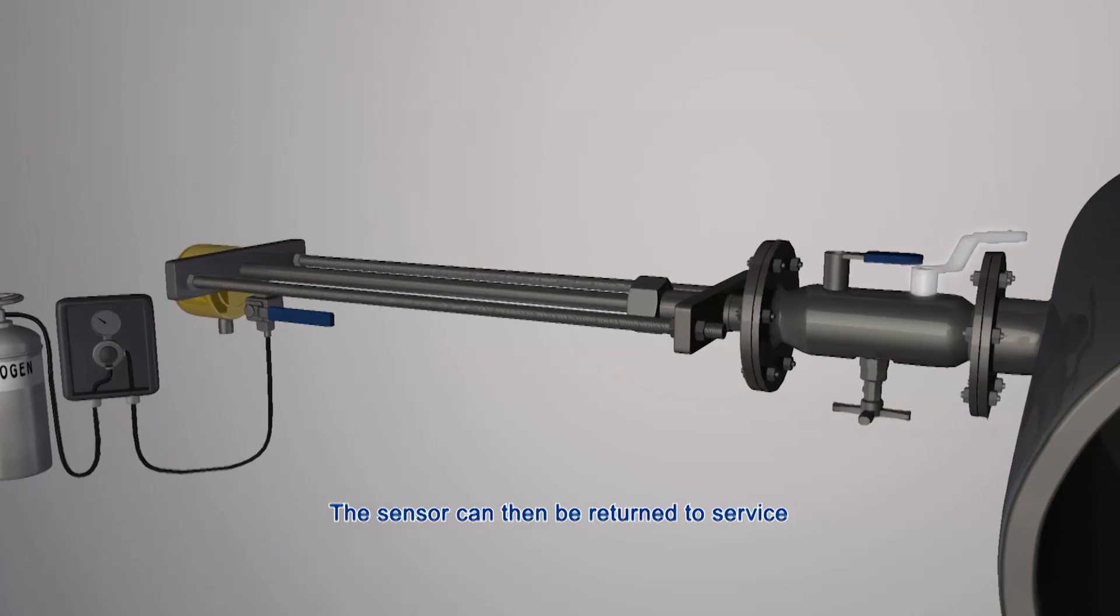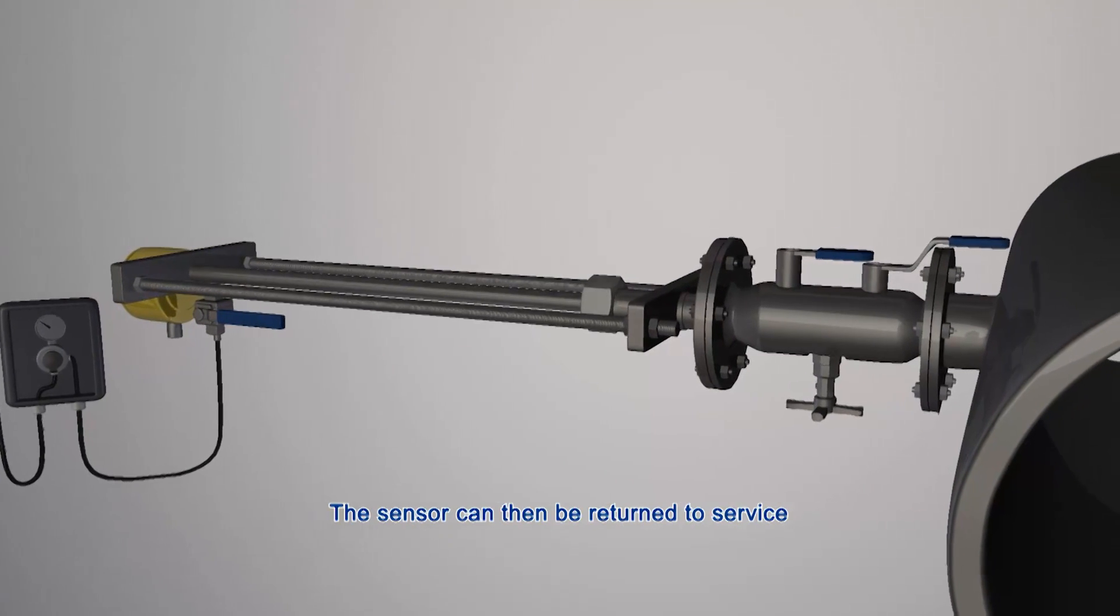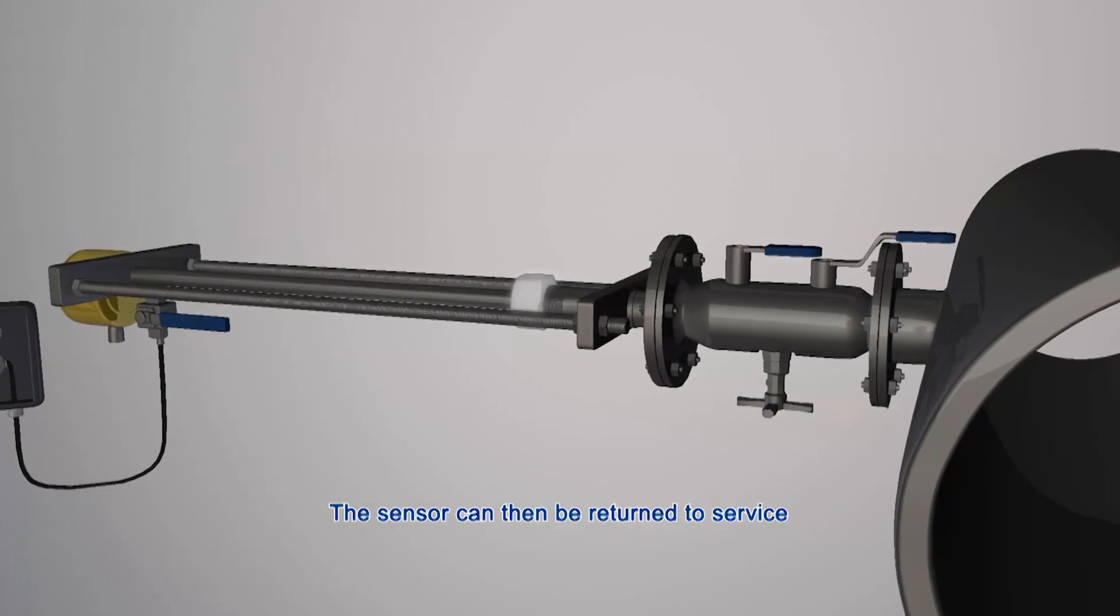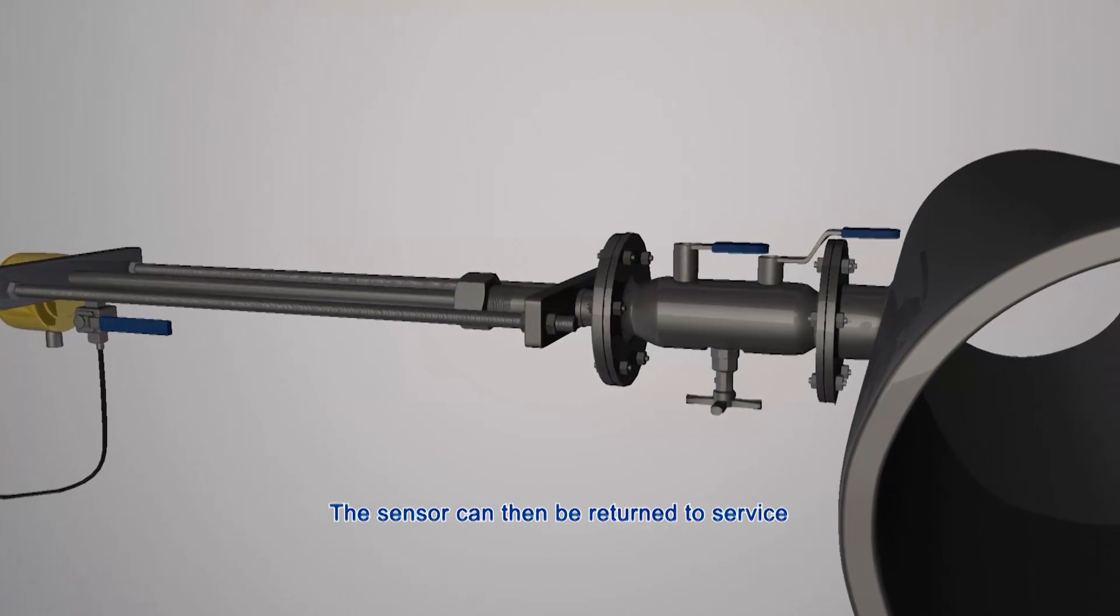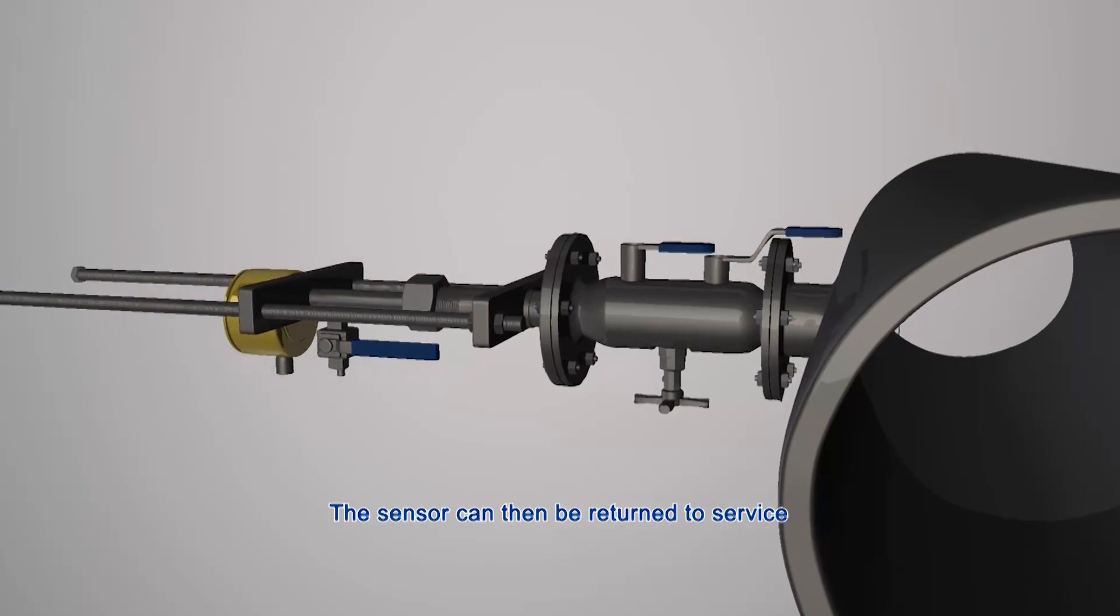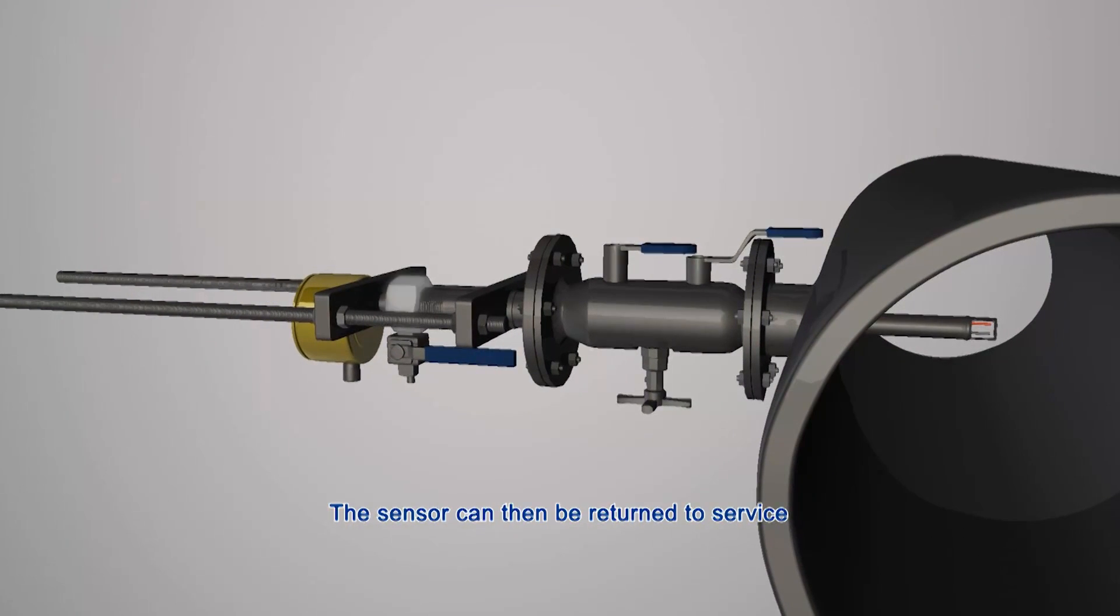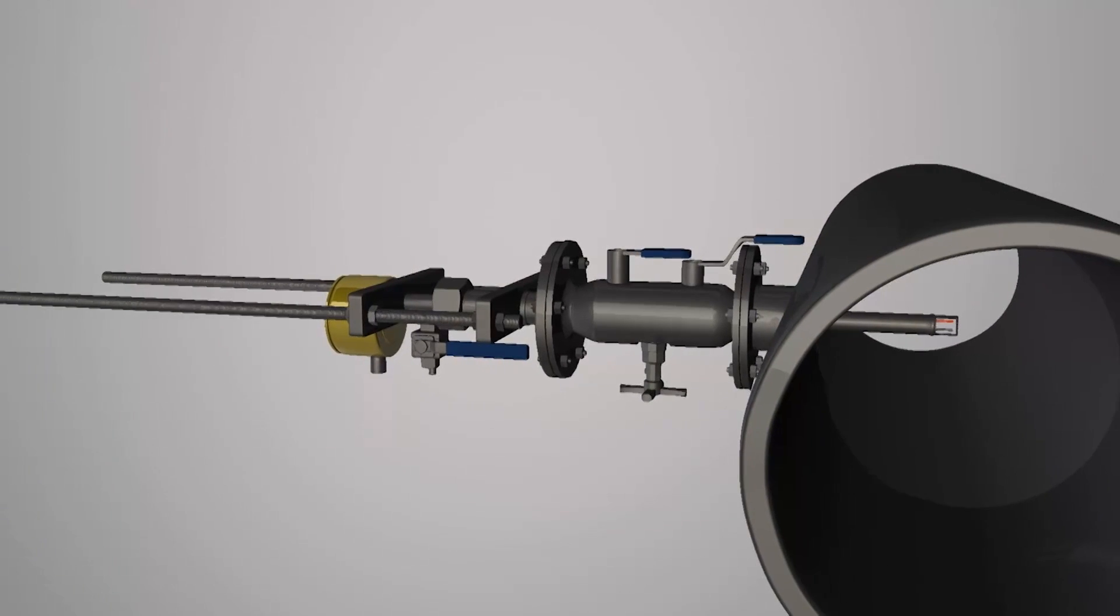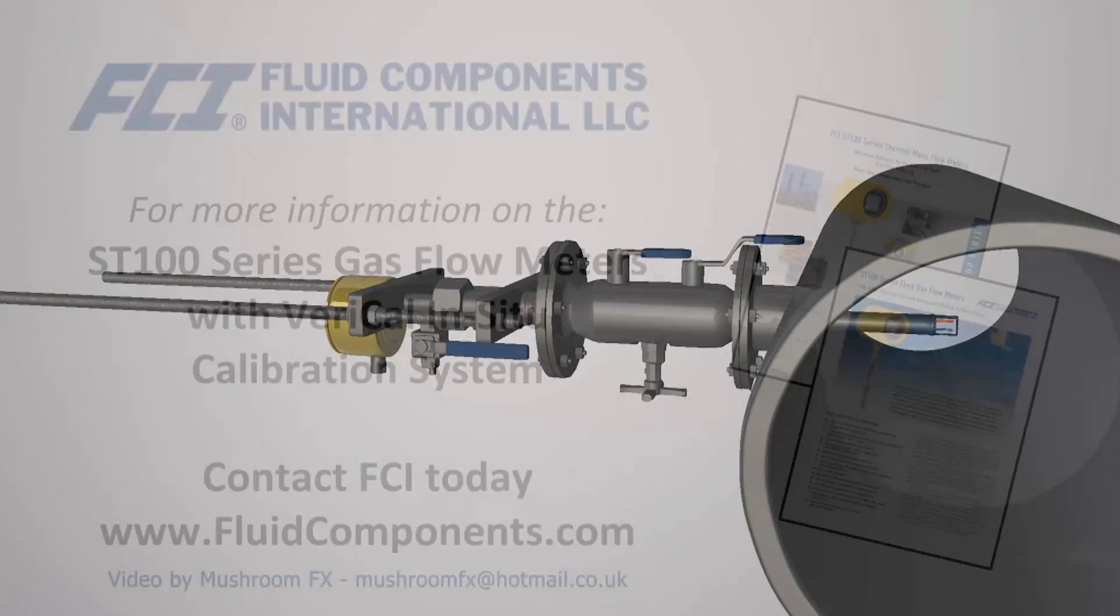The advantage of FCI's Vari-Cal system is that it provides on-site accuracy compliance without costly and time-consuming transportation of the flow meter to the factory for calibration recertification. For more information, please contact your local FCI representative or distributor or contact FCI's sales department.